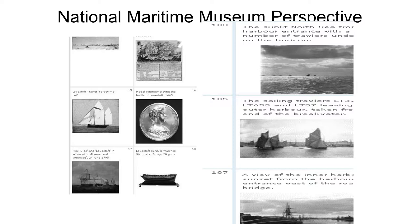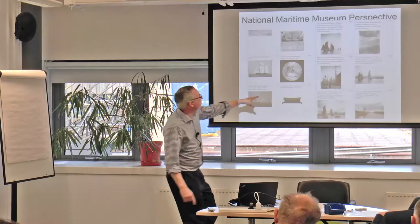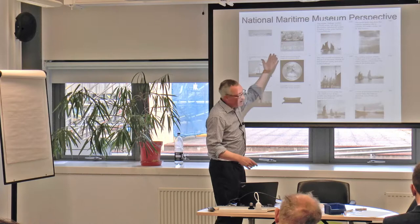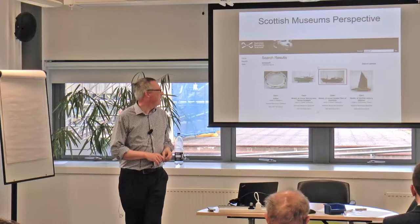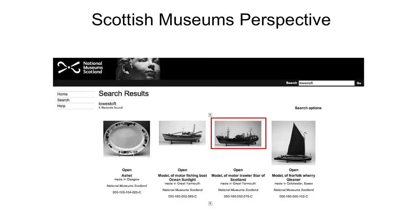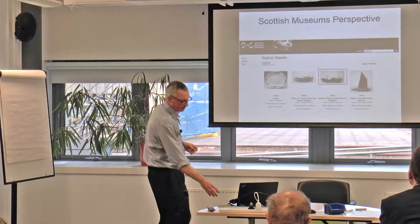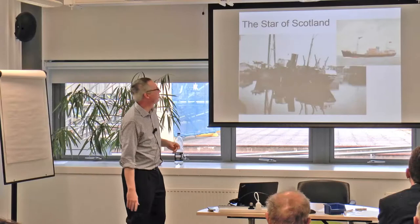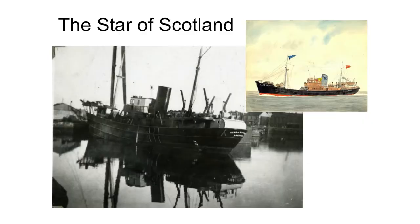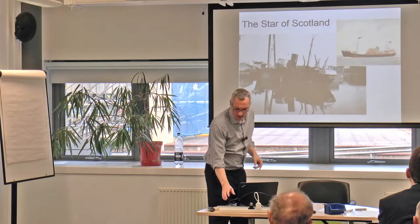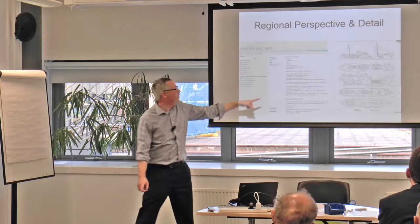The National Maritime Museum perspective: Lowestoft being on the coast has a maritime history. There are medals commemorating the Battle of Lowestoft, different objects with a different place in that history. And when you come back to that boat — the model shown earlier — it turns out the real boat ended up in Lowestoft, was renamed the Jamaica. There are paintings of it in Lowestoft port, still called the Star of Scotland there before being renamed.